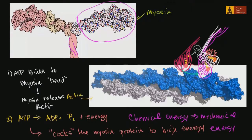It starts attached. ATP comes and bonds onto it, which causes it to be released. Then the ATP hydrolyzes into ADP and a phosphate group, and when that happens, that energy is released — this puts the myosin into a higher energy state. It spring-loads the protein, and then it attaches up another notch on the actin filament. Then the phosphate group leaves, and that conformational change in the protein is enough to generate the power stroke to actually push on the actin filament.